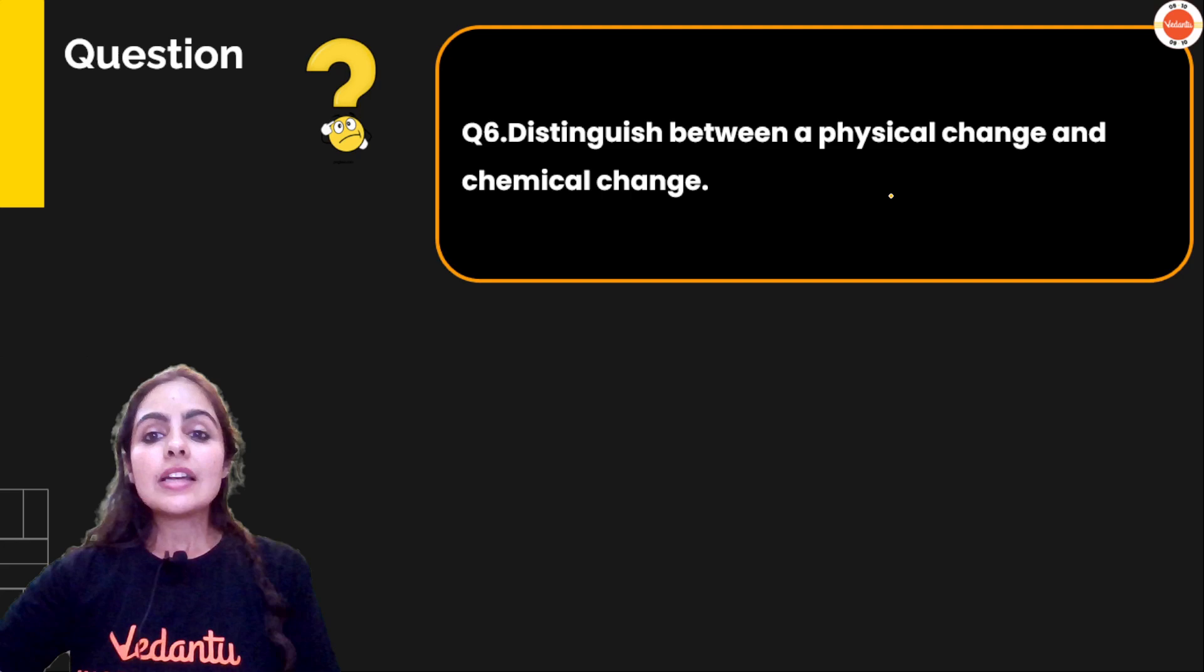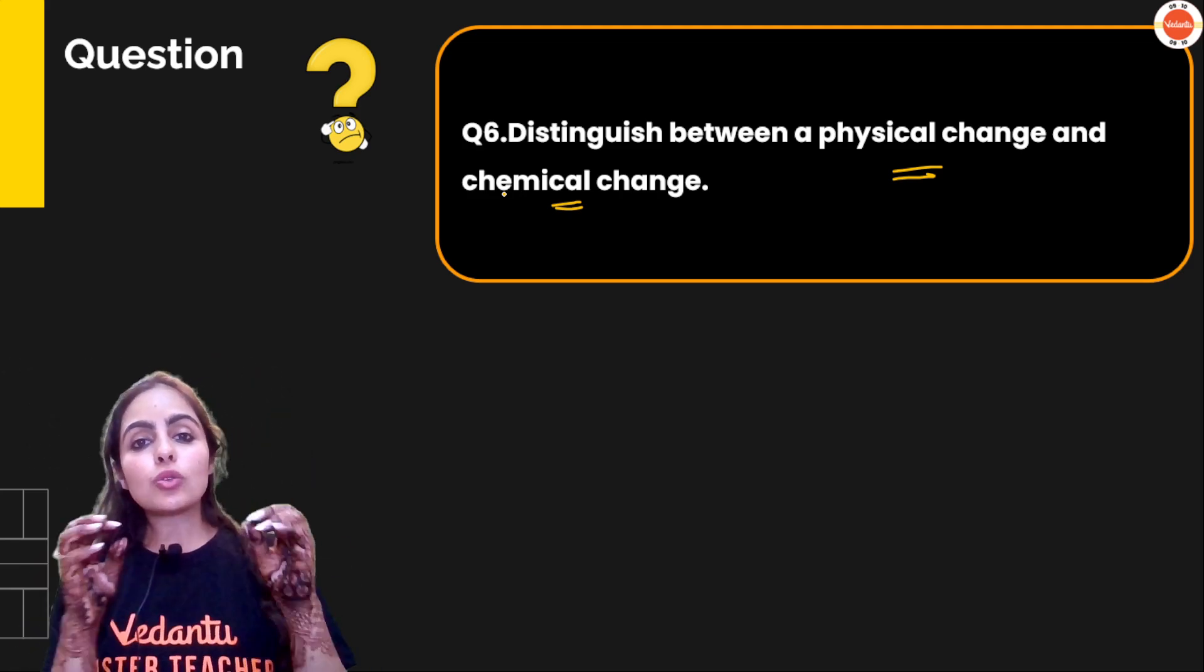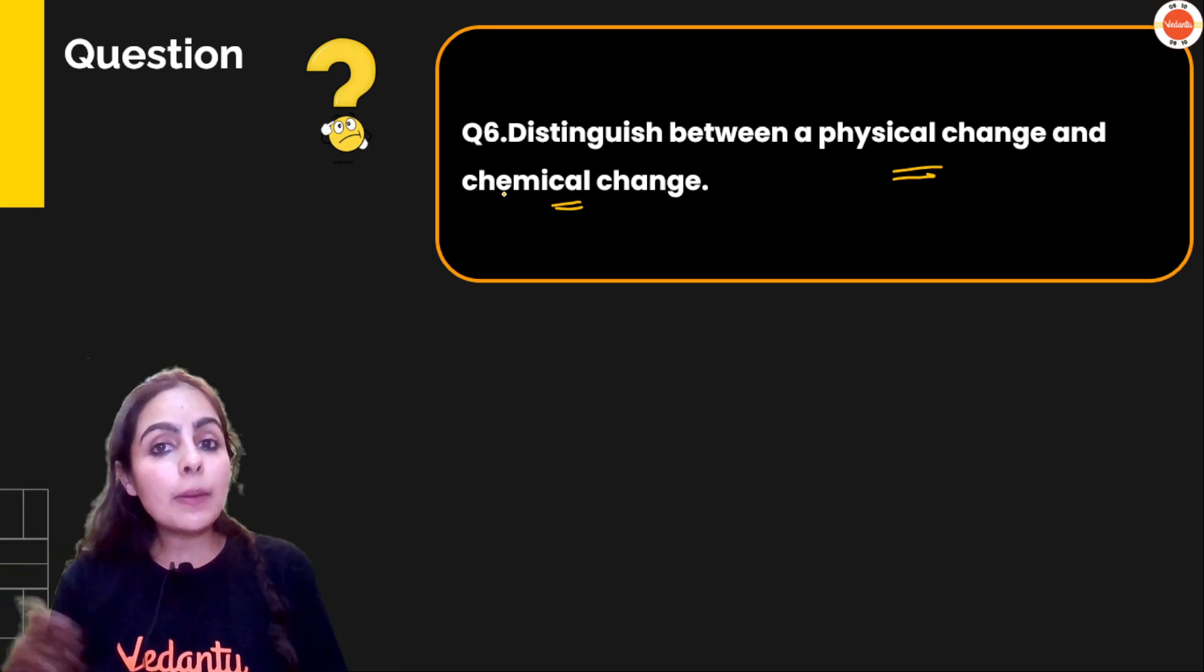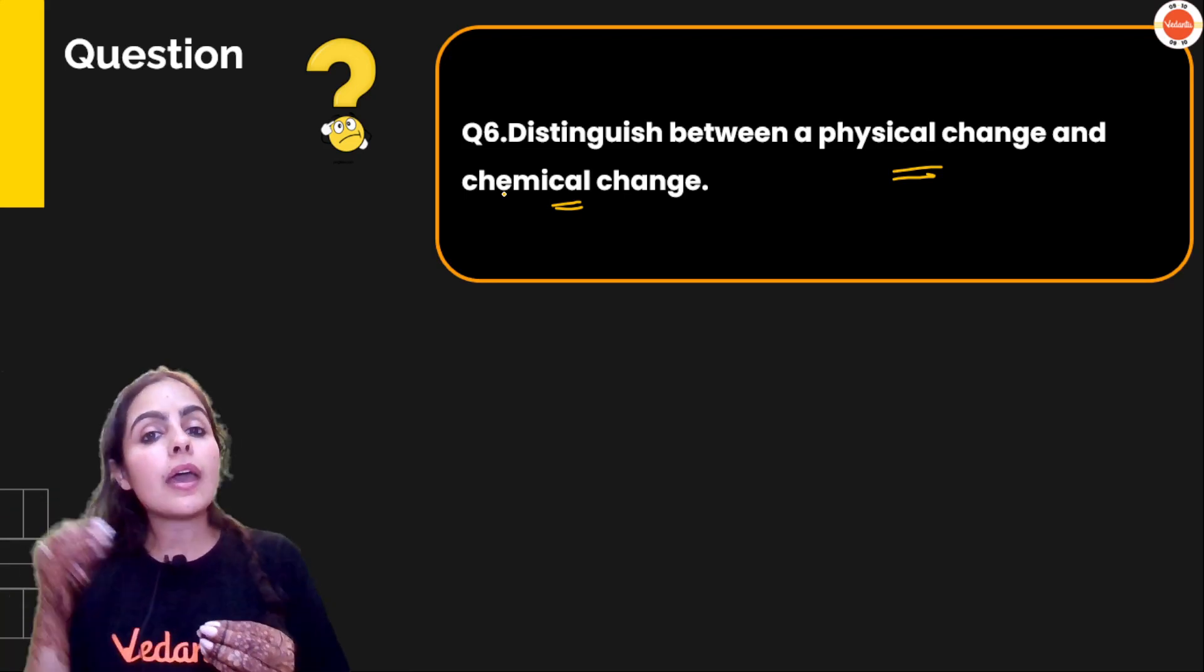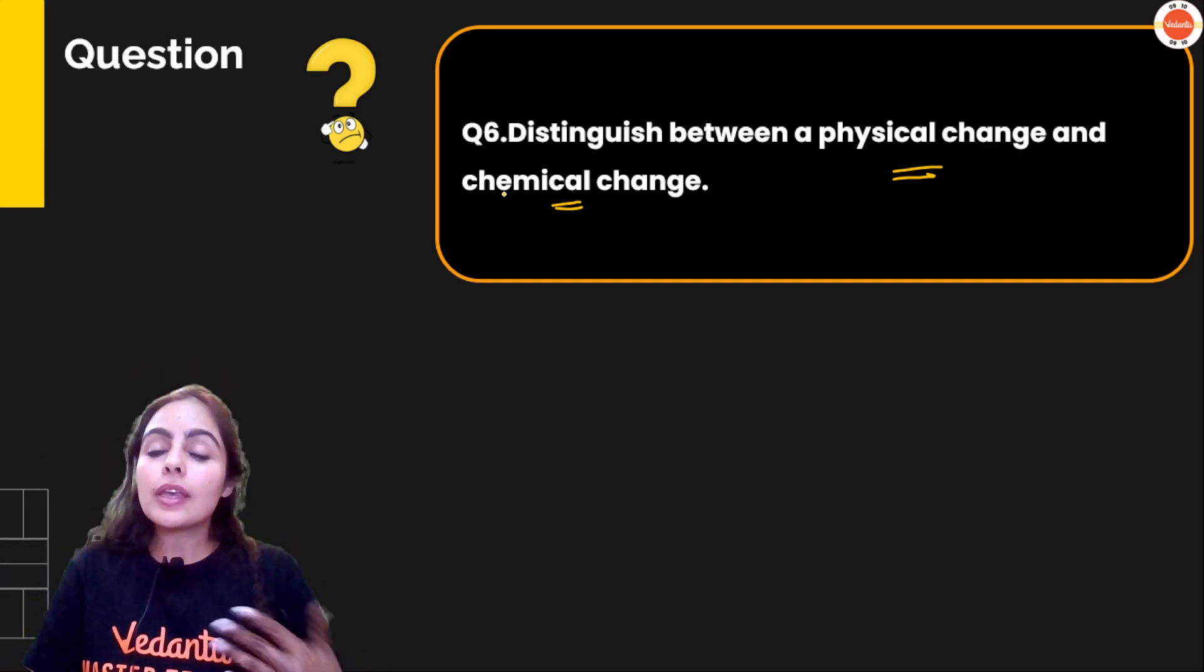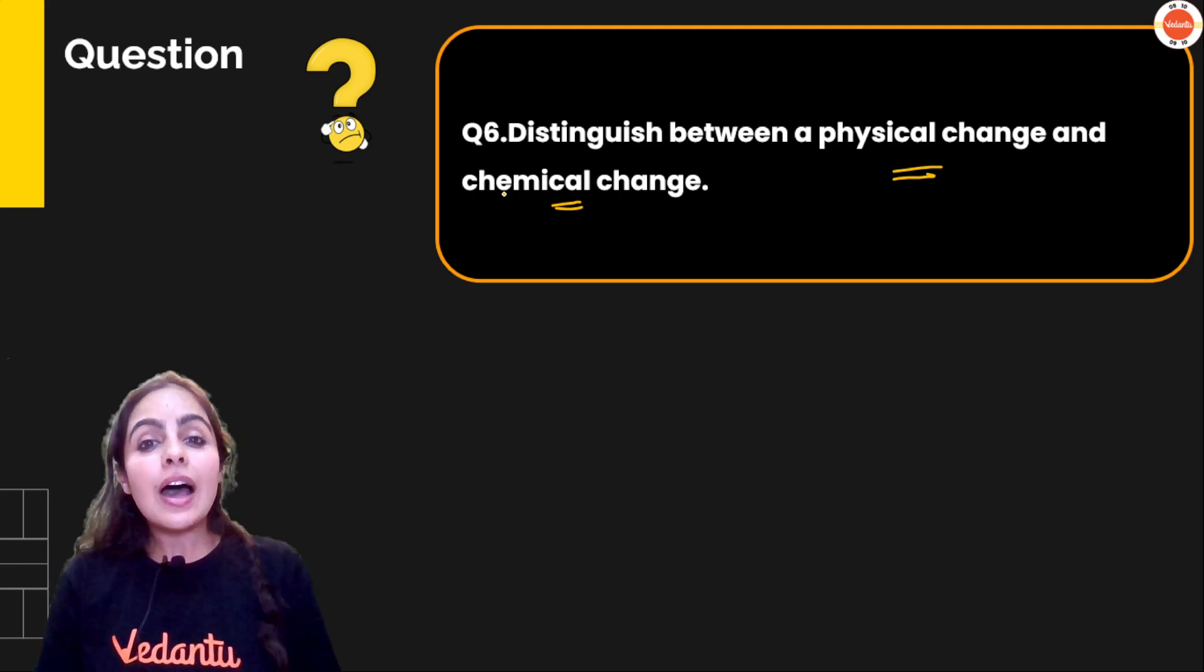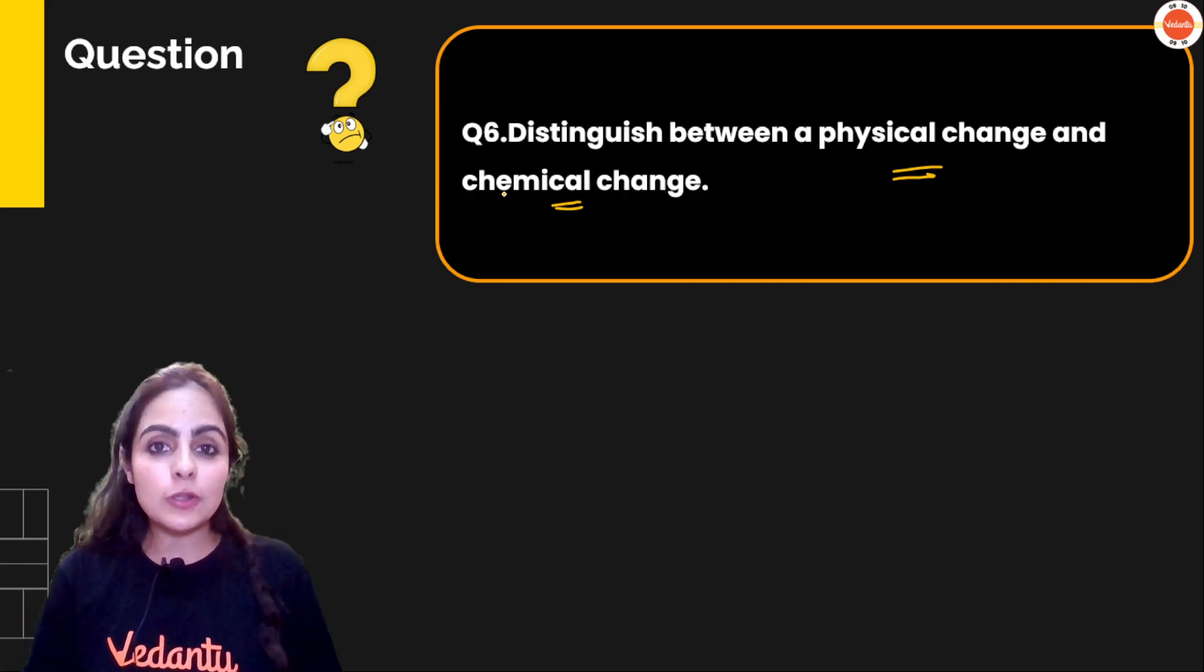Next question on your screen. Distinguish between physical change and chemical change. So take simple examples and keeping those examples, you can write this answer in your own language. Physical change means when water ice melts or water evaporates, then water will remain water. Like H2O will remain H2O. Whether it is in ice form or liquid form or gaseous form, H2O will remain H2O, right boss? Chemical composition will not change. So physical change means if no new substance is formed, that's a physical change. Chemical change means full chemical transformation, where after many chemical changes happen, new substances come with new properties all together.